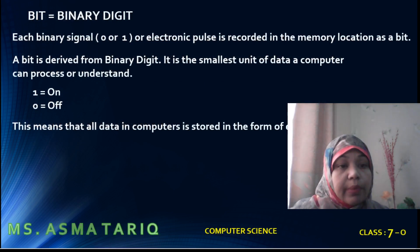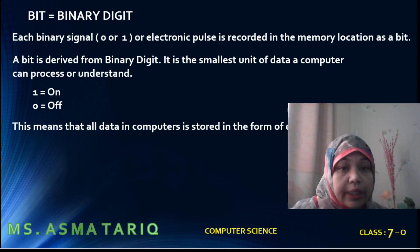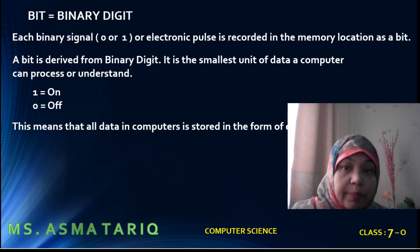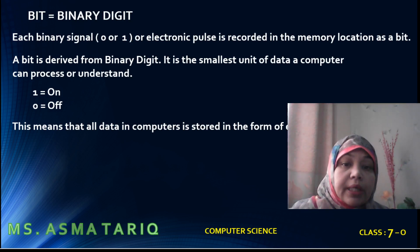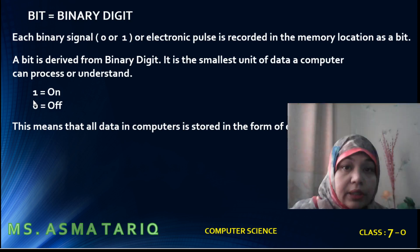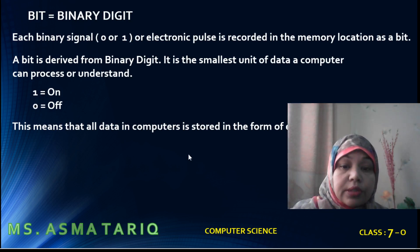Bit is binary digit. Each binary signal — 0 or 1 — or electronic pulse is recorded in the memory locations as a bit. A bit is derived from the word binary digit. It is the smallest unit of data a computer can process or understand. 1 represents the on signal and 0 represents the off signal. This means that all the data in computers is stored in the form of electronic pulses.